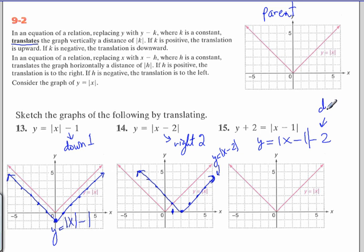And a horizontal shift right 1, because of this minus 1 inside the absolute value. You go down 2, and you go to the right 1.